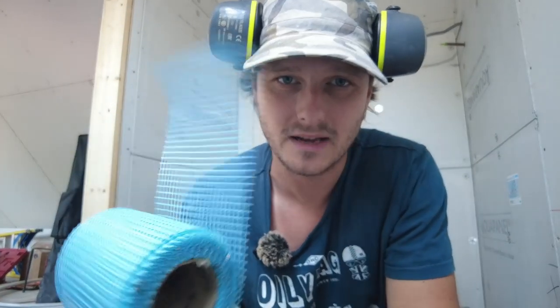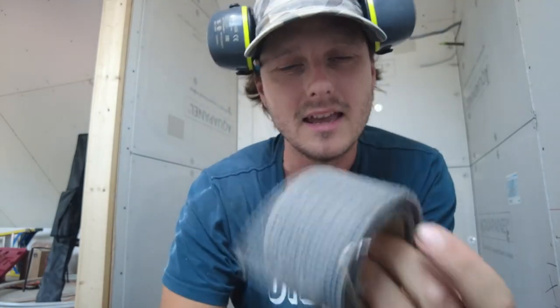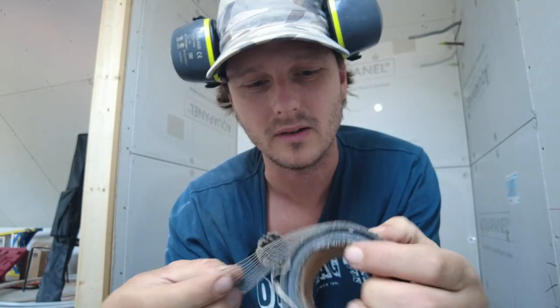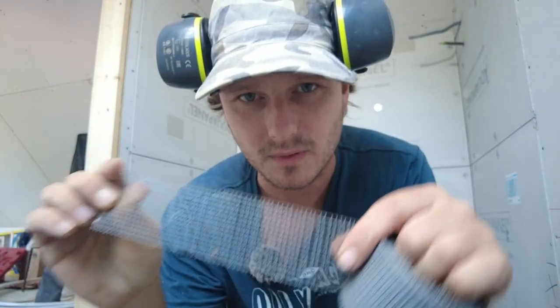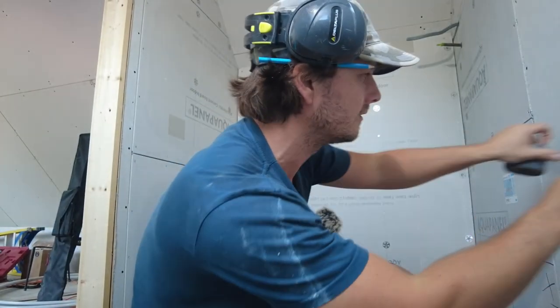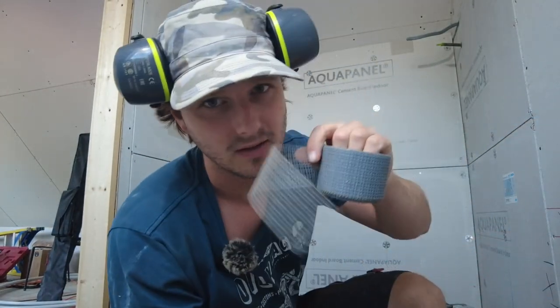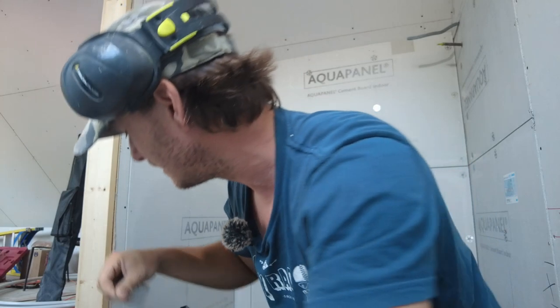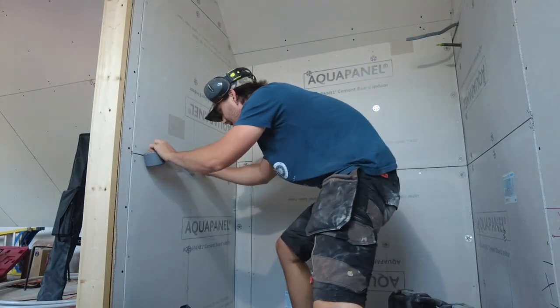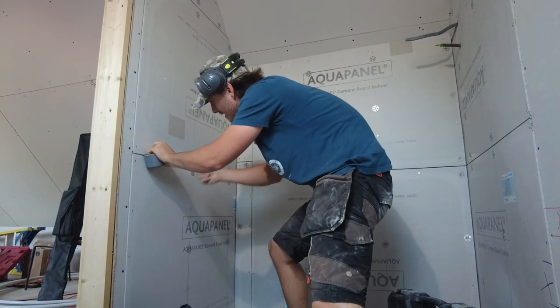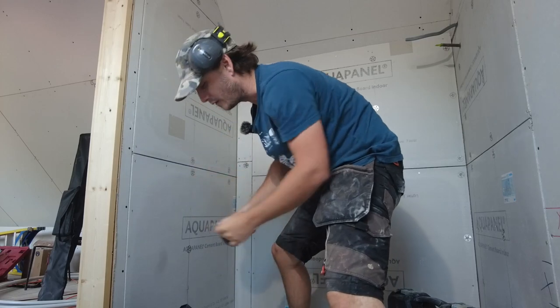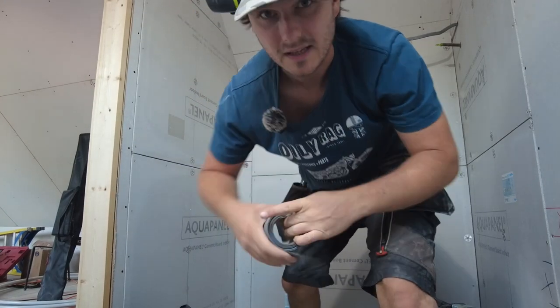You need alkaline resistant mesh tape, this one's from Knauf themselves. I'll be using this one today. You can get a different type, I've used this previously. This one's a bit sticky, so it will stick on the actual wall. You've got a slightly different technique for this because this one you would stick on first, and then you do your adhesive. But we're doing the other way around today.